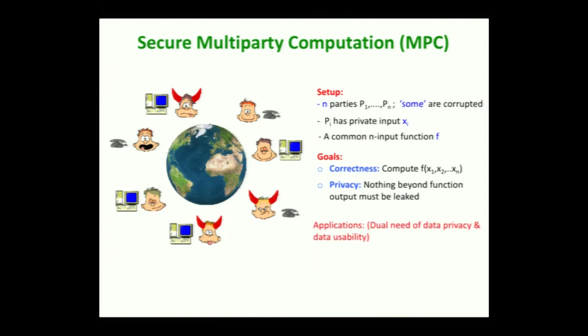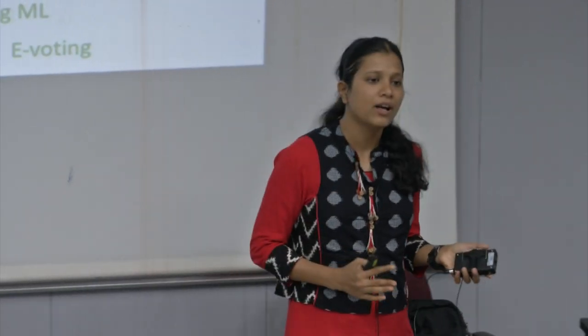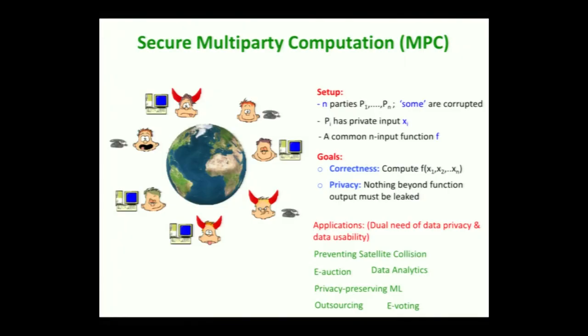There are a huge number of applications of MPC. The range starts from preventing satellite collision, e-voting, electronic elections, outsourcing, privacy-preserving machine learning, privacy-preserving data analytics, and so on. What is common among all these problems is that you need both data privacy and data usability — computing on the data — at the same time. In fact, MPC captures almost anything in cryptography and is arguably called the holy grail problem of cryptography.